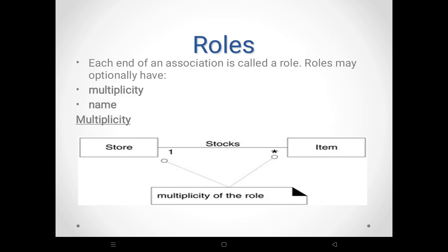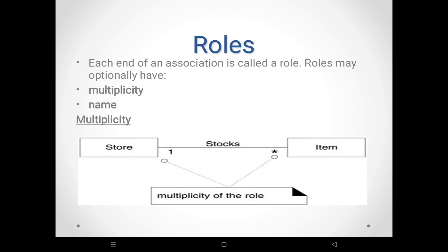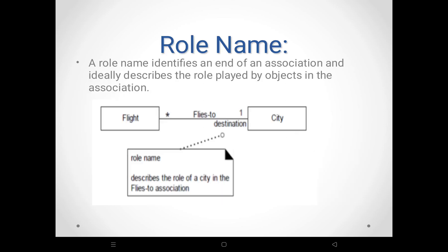What is the role? Each end of the association is called a role. A role may optionally have multiplicity or a name. Multiplicity is nothing but how many objects are currently connected. For example, one Store consists of many items — that is one-to-many multiplicity. The role has two components: multiplicity and name.